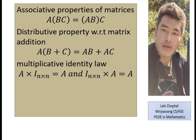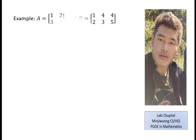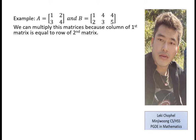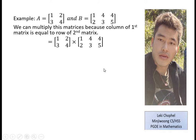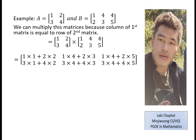Let me now show you how to multiply a matrix. Let matrix A = [1, 2; 3, 4] (a 2×2 matrix) and matrix B = [1, 2, 4; 2, 3, 5] — wait, let me clarify: B has elements 1, 2, 3 in the first row and 1, 2, 4, 3, 4, 5. We can multiply because columns of A (2) equal rows of B (2). You take the row of the first matrix and multiply by each column.